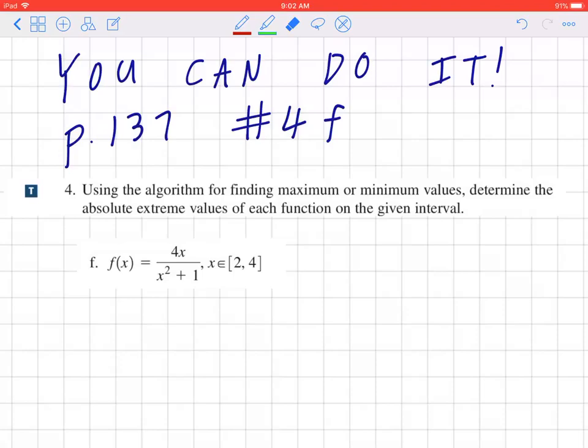Hi everyone, let's take a look at number 4f on page 137. Using the algorithm for finding maximum or minimum values, determine the absolute extreme values for each function on the given interval. f of x equals 4x all over x squared plus 1, where x is in between 2 and 4.